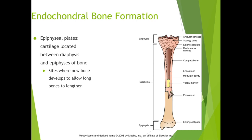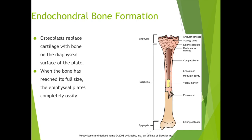The presence of epiphyseal plates makes reviewing x-rays on young kittens and puppies quite difficult, because they have their ossified bone, their partially cartilage bone, and all these growth plates still present — very challenging. Osteoblasts replace cartilage with bone on the diaphyseal surface of the plate. The diaphysis is the shank or length aspect of the bone. When the bone has reached its full size, the epiphyseal plates completely ossify to create solid bone.